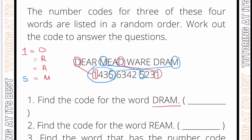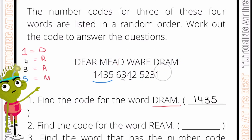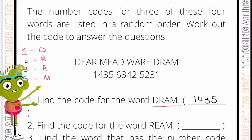For the letter A — working through the most common letters and patterns — A can be in the third or the second position. We find a number that is in the third or second position, which is 3, so A equals 3. That leaves R being 4 — giving us 1, 4, 3, 5. R is seen in the third position and 4 is also in the third position, so we can match that up. The code for the word 'dram' is 1435. Let's now go to question two.